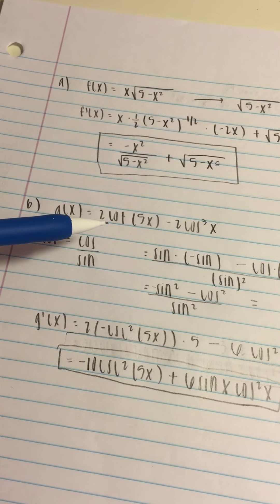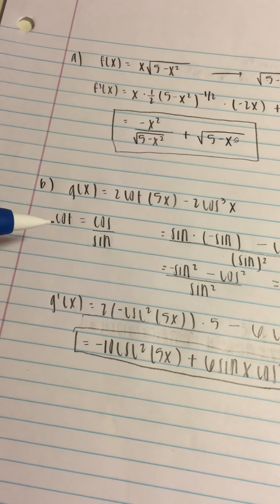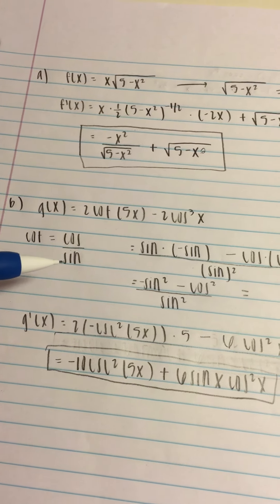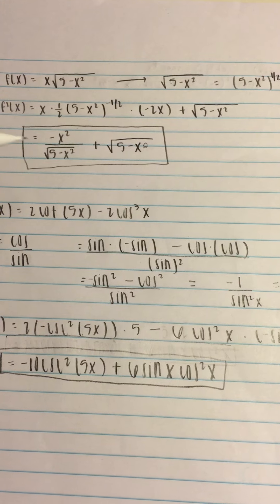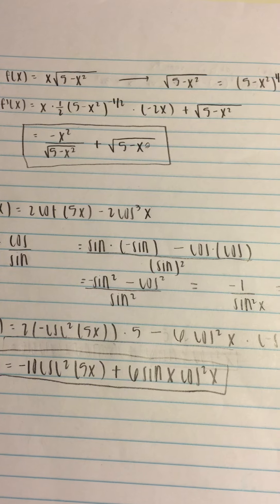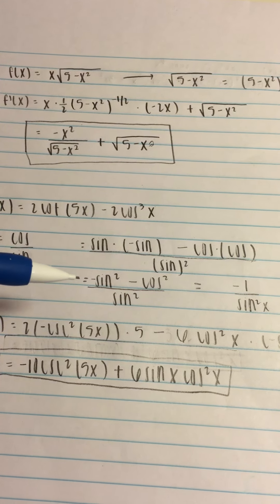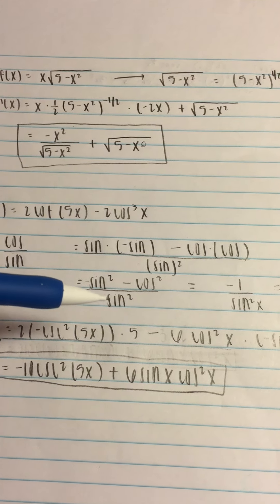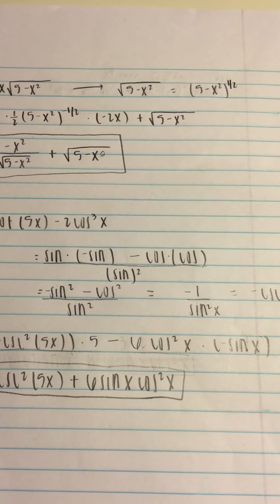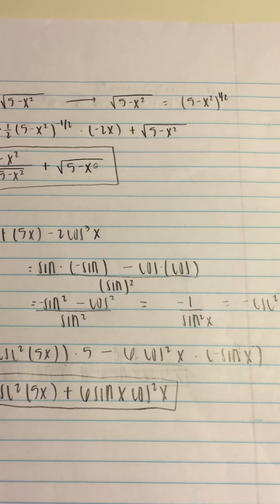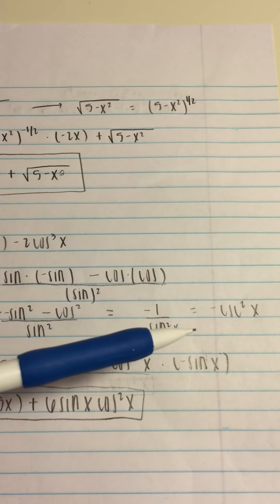First we need to find the derivative of cotangent, and to do that we use the quotient rule. Rewriting cotangent as cosine over sine, we take the bottom, sine, times the derivative of the top — the derivative of cosine is negative sine — minus the top, cosine, times the derivative of the bottom, which is cosine, all over sine squared. Combining terms gives negative sine squared minus cosine squared over sine squared. Since negative sine squared minus cosine squared equals negative 1, this becomes negative 1 over sine squared, which equals negative cosecant squared.